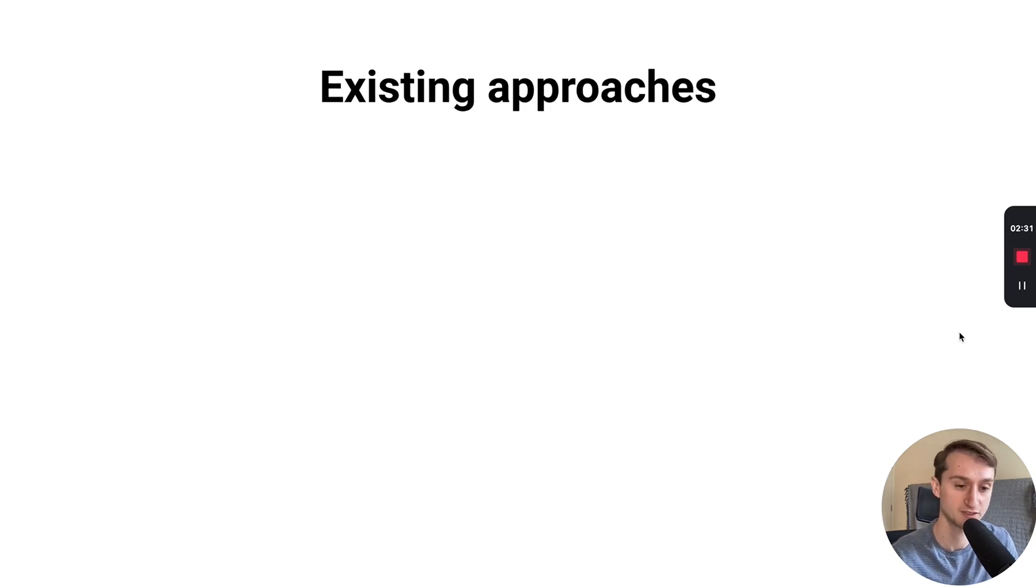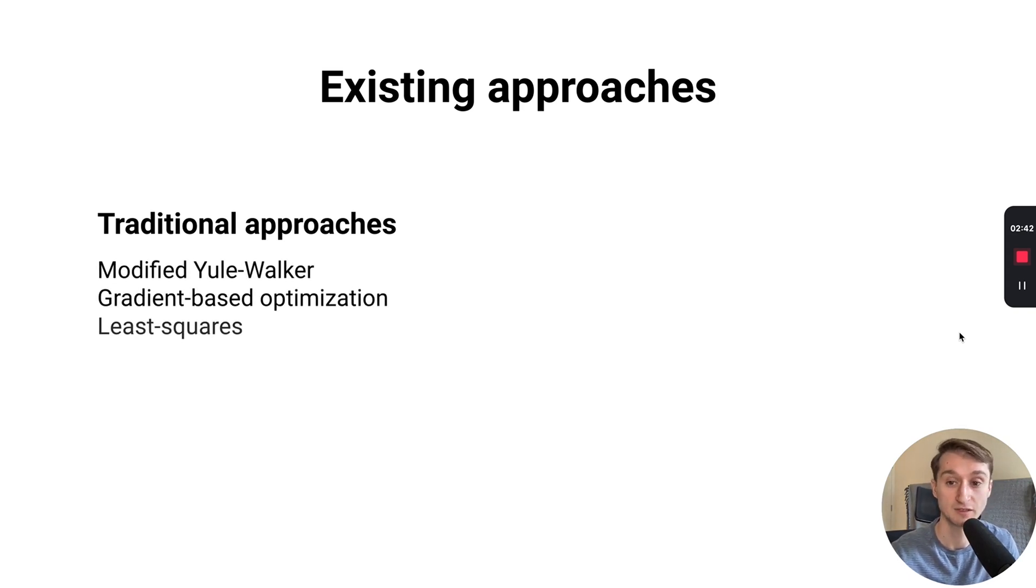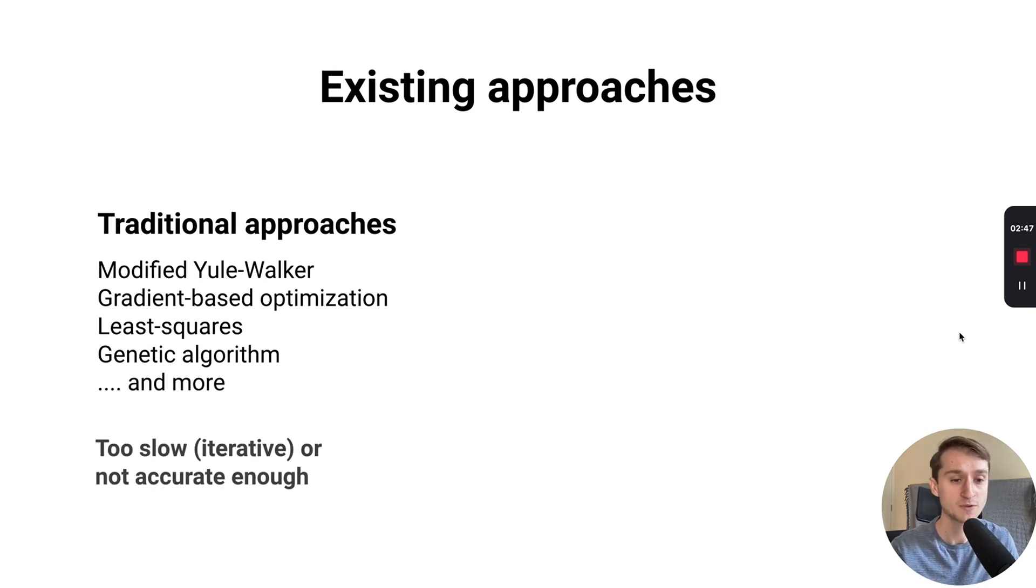There are many existing approaches to design a filter response that has an arbitrary response. Traditional approaches include things like the modified Yule-Walker approach, gradient-based optimization, least squares approaches, genetic algorithms, and many others. The problem is that often these approaches are either too slow because they require many iterations or complex calculations like matrix inverses, or they may not be accurate enough if run for very few iterations. This can be a problem when we want filter design happening in real time or on embedded systems where speed and accuracy are both important.